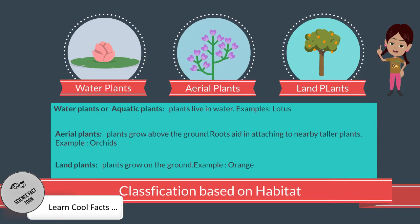Classification based on habitat. Water Plants or Aquatic Plants: These plants live in water. Example: lotus. Aerial Plants: These plants grow above the ground. They are usually found in rainforests. Roots are short and they aid in attaching to nearby taller plants. Example: orchids. Land Plants: They are also known as terrestrial plants. Example: orange.